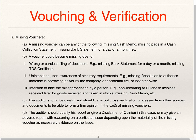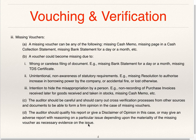The auditor should be careful and carry out cross-verification from other sources and documents to form a firm opinion in case of missing vouchers. If the auditor has any suspicion about a transaction recorded in the books, he should seek cross-verification. Depending on the materiality of the missing voucher, he can qualify his report, give a disclaimer of opinion, or give an adverse report.